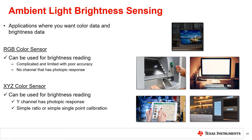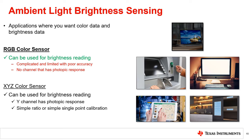In many color sensing applications, the lux value of the light is also desired. This can be used in conjunction with the color value to set the display brightness and color to ensure the best possible user experience. For RGB color sensors, sensing lux is more complicated and limited. Typically, no channel of the RGB color sensor provides a photopic response, so a complicated calibration and matrix is required and will vary in accuracy across the color gamut. With an XYZ color sensor, the Y channel has a photopic response and is linear to lux. The manufacturer of the color sensor usually provides a ratio, or a simple single point calibration can be used to find the ratio between the Y channel and lux.